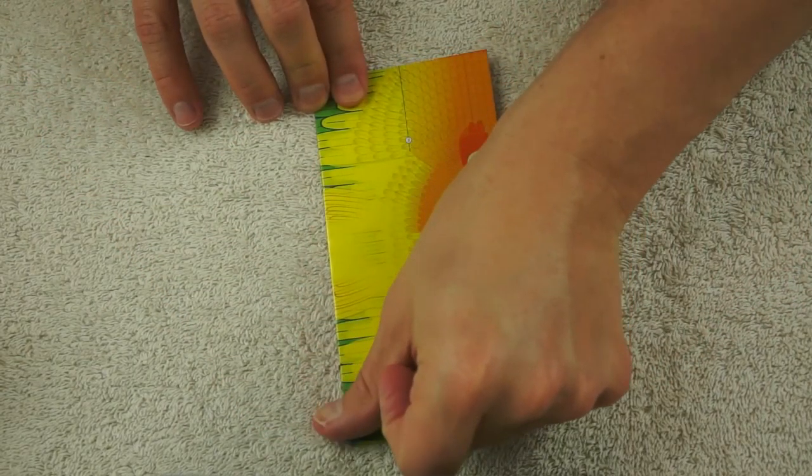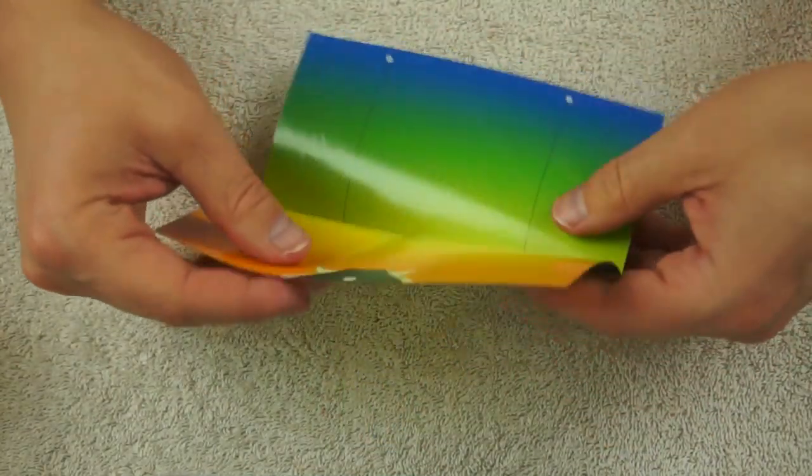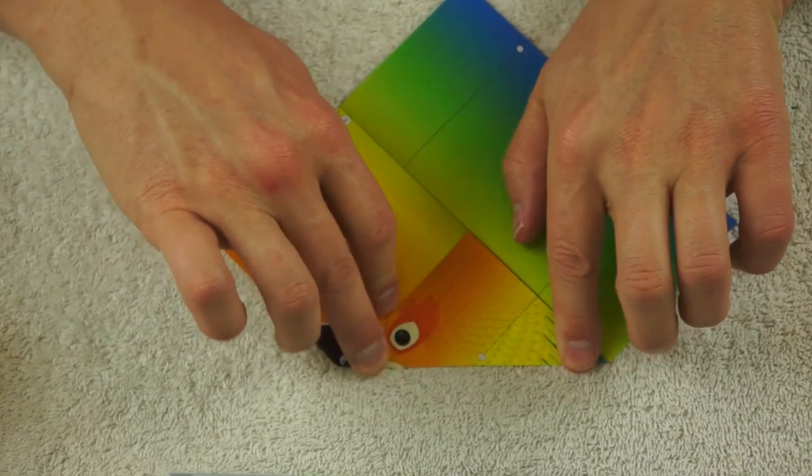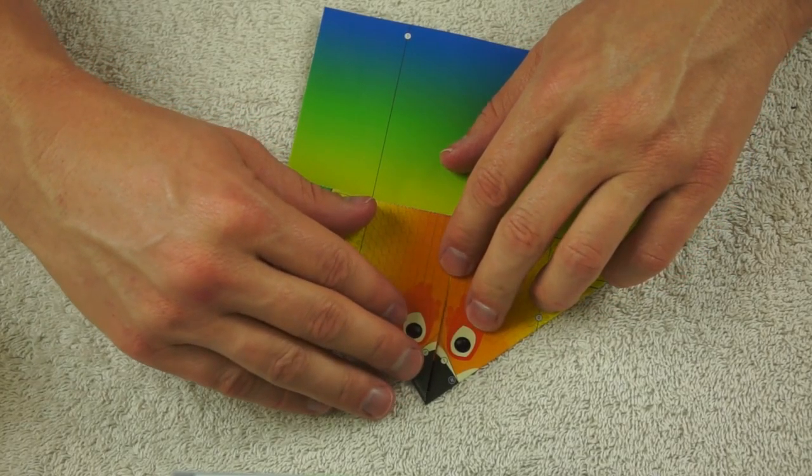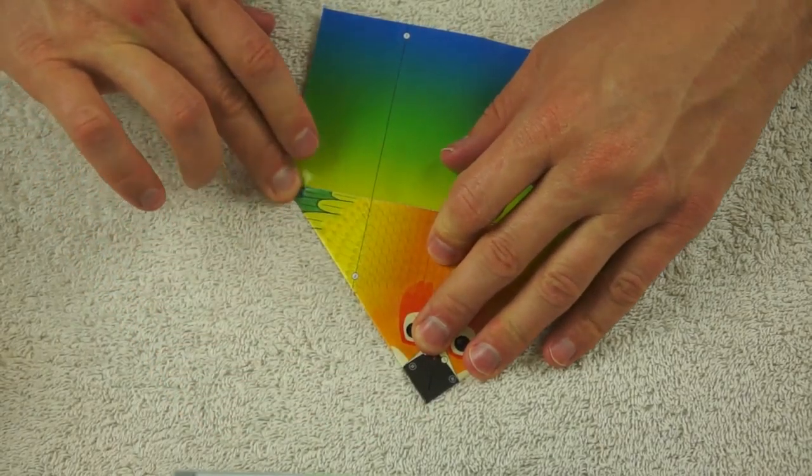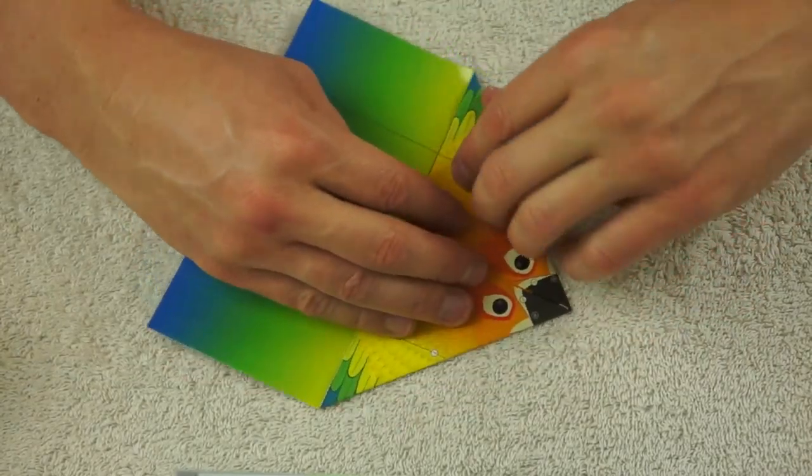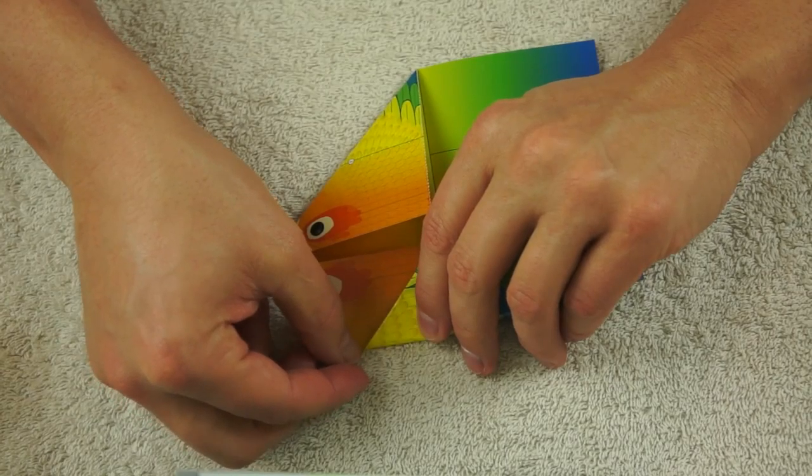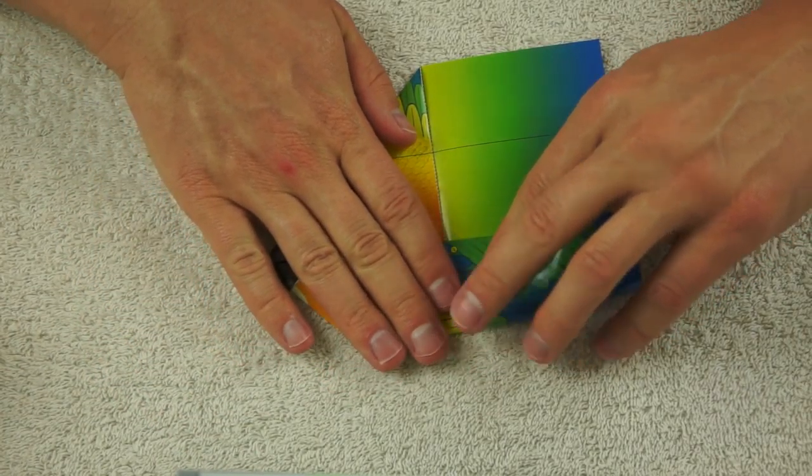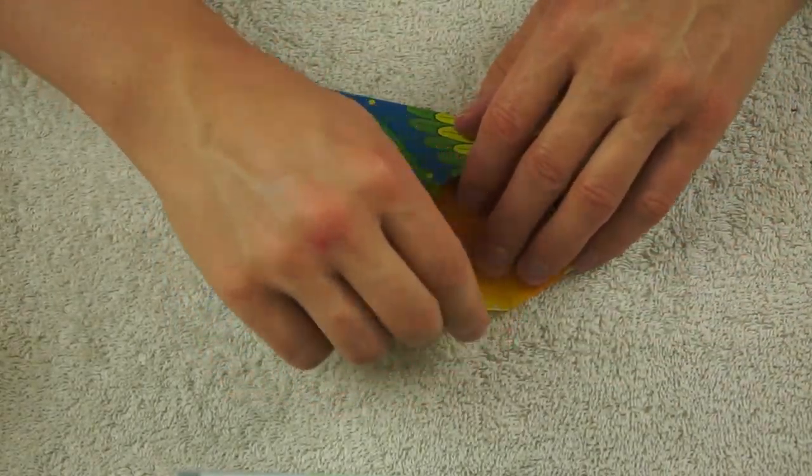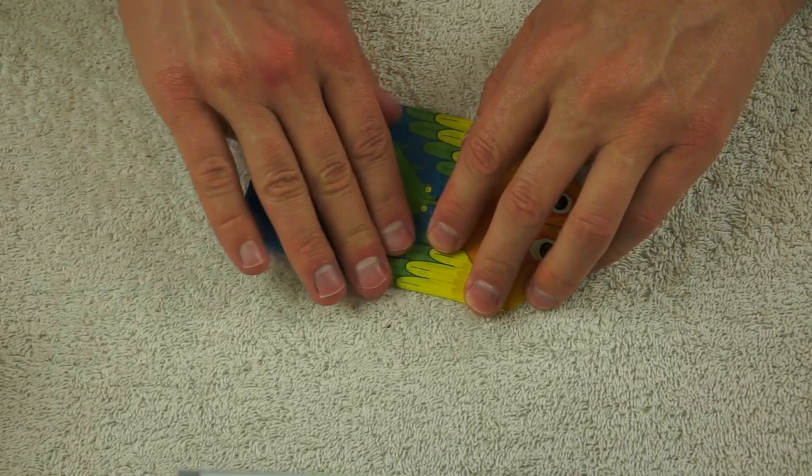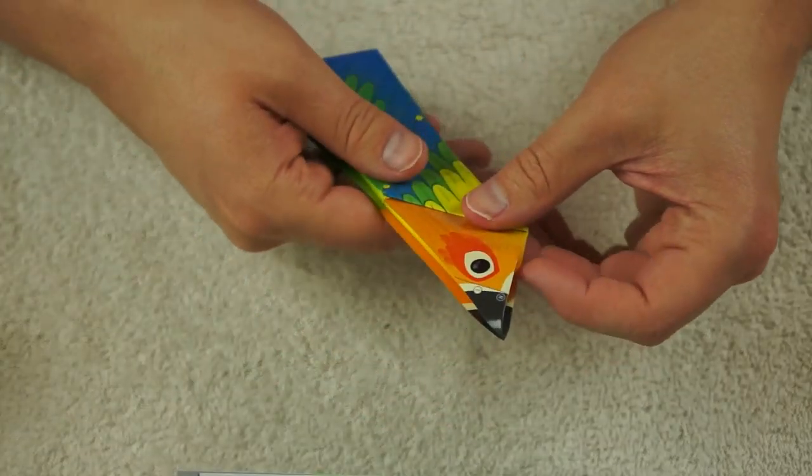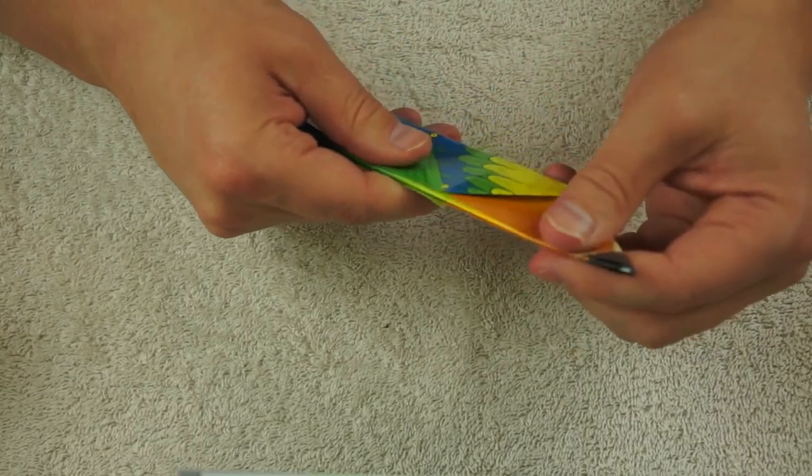This one gets folded in half like this to make a rectangle instead of a triangle. Then we unfold it. Then we fold this down and this one down on the other side, kind of like a paper airplane. Fold the same thing on the other side here. It looks very pretty. And we turn it over and we fold it in half like that.